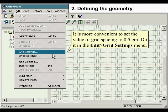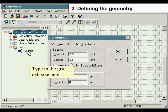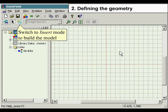Do it in the Edit menu and select Grid Settings. Type in the grid cell size here. Select the model editor. Switch to Insert Mode to build the model.